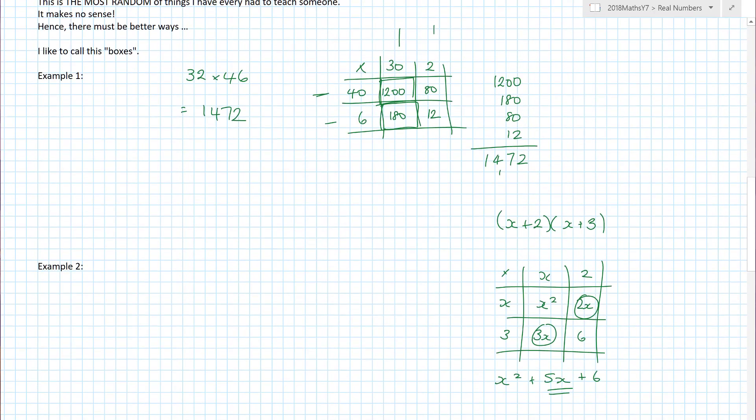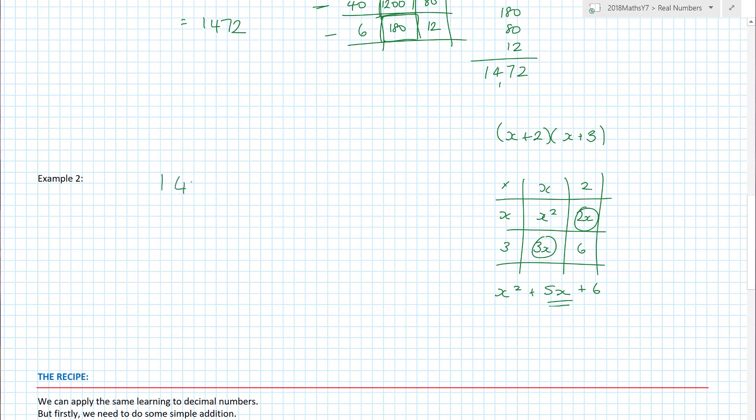And this works in exactly the same way as multiplication. We'll just do one more example. Let's do 147 times 63. In this case, my box is going to have three numbers along the top. 147 and 63. When I multiply those together, 60 times 100 is 6,000, 60 times 40 is 2,400, and 7 times 60 is 420. 3 times 100 is 300, 3 times 40 is 120, and 3 times 7 is 21. So when I add all those together: 6,000, 2,400, 420, 300, 120, and 21.